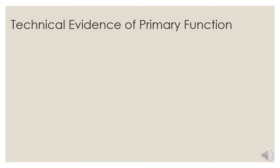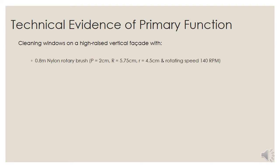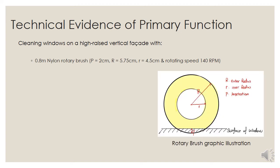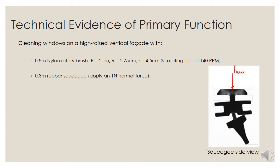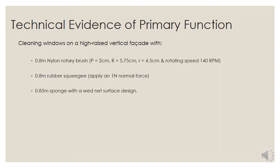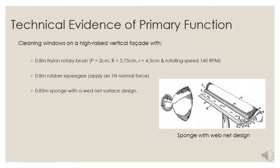Thank you Lin for introducing the overall design. Here I would like to get into the details of our primary function. The primary function of the machine is cleaning windows on a high-rise vertical facade. To ensure the cleanness of the window, a 0.8-meter nylon rotary brush with a penetration of 2 cm is sprayed with purified water to clear any dirt or residuals on the surface. And a 0.8-meter rubber squeegee with 1 Nm force is used to wipe the water downwards. Because the machine cleans the window vertically, it is unavoidable to have water lines at the side of the squeegee. As a result, a 0.85-meter sponge with a wetted surface area is added to absorb any remaining water.